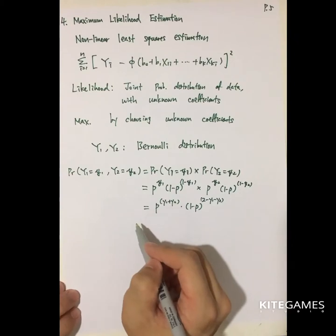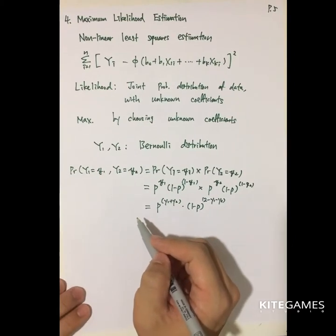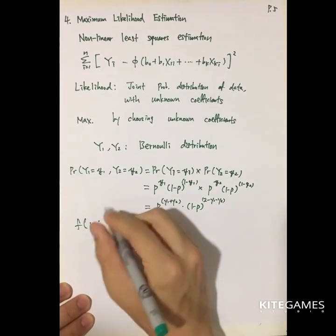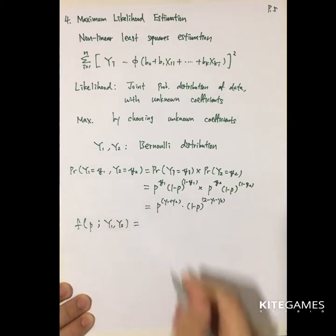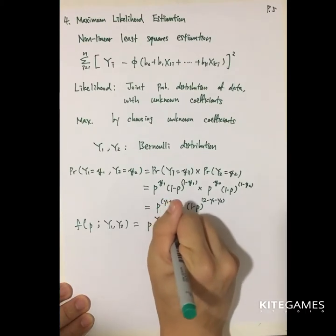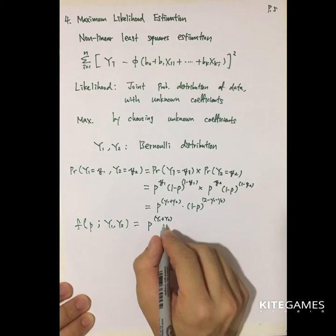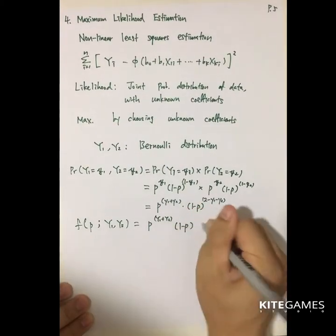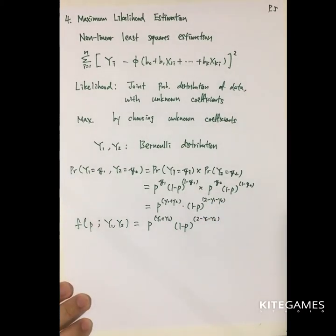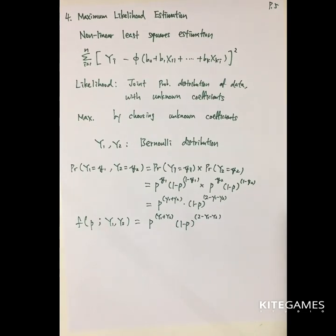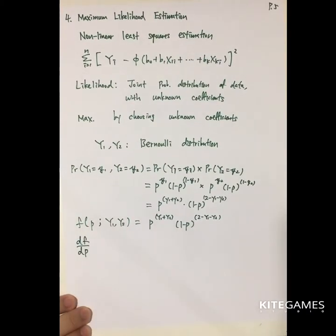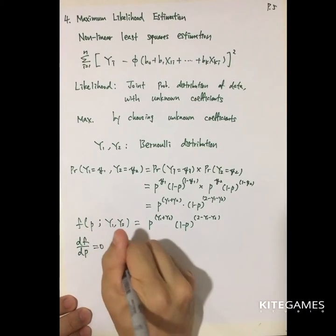We put this probability distribution into a function called the likelihood function — it is a function of P given the data y1 and y2. So it becomes L(P|y1,y2) = P^(y1+y2) · (1−P)^(2−y1−y2), using capital Y because we are considering the whole distribution. By calculus, to find the maximized value, we take dL/dP, choose the probability that maximizes the likelihood function, and set it equal to zero.